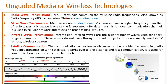Radio wave transmission: here two terminals communicate using radio frequencies, which are around 10 to the power 4 on the frequency range. These are omnidirectional, meaning they can propagate in all directions.